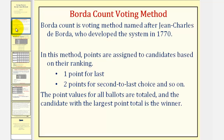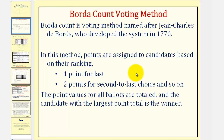Borda Count is a voting method named after Jean-Charles de Borda, who developed the system in 1770. In this method, points are assigned to candidates based upon their ranking, where candidates receive one point for last, two points for second to last, and so on. For example, if there were four choices, first choice votes would be worth four points, second choice votes worth three points, third choice votes worth two points, and the fourth choice votes would be worth one point. Then, the points of the ballots are totaled, and the candidate with the largest point total is the winner.